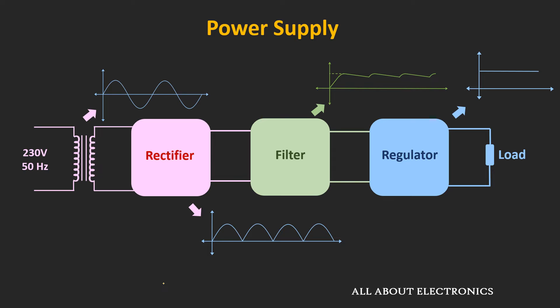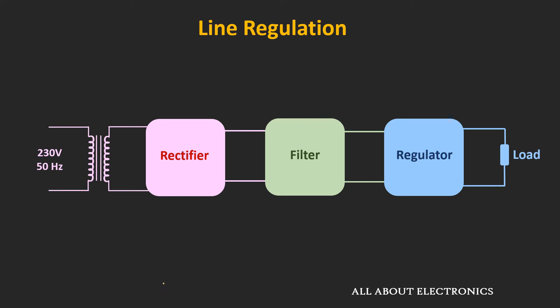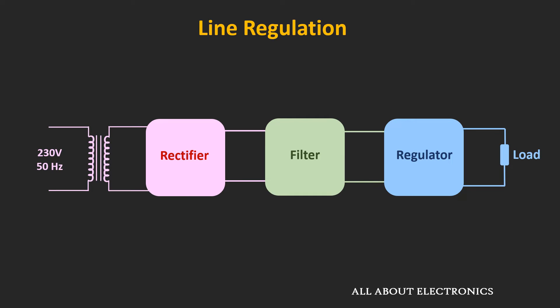For any power supply, the two important parameters are the line regulation and the load regulation. These two parameters define how well the supply can provide constant output voltage even if there is a change in the line voltage or the load. Line regulation is defined as the change in the output voltage divided by the change in the input voltage. For the ideal power supply, this line regulation should be equal to zero. For a good power supply, this line regulation should be as minimum as possible.